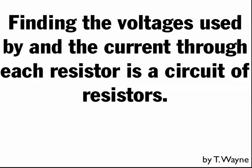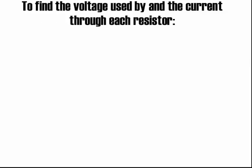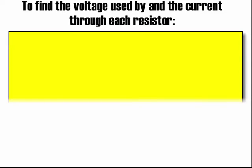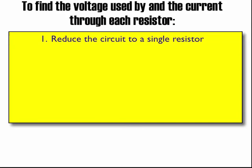This video is going to show you how to find the voltage used by and the current through each resistor in a circuit of resistors. There are four steps to doing this. The first step is to reduce the circuit to a single resistor. We did that in the previous video.